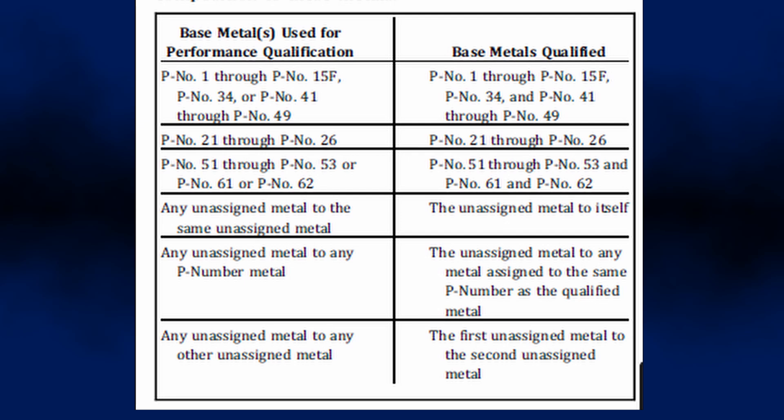Table QW-423 tells us that if we qualify for one of the P numbers in the left column — say P1, even P1 unto itself — then we are qualified for everything included in the corresponding right column on the same row.